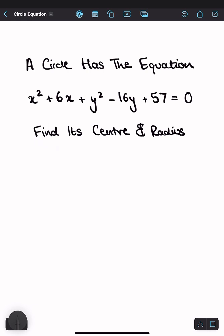So complete the square on the x terms, you get x plus 3 squared minus 9, because you have this value and then subtract that value squared, plus y minus 8 squared minus 64 plus 57 equals 0.